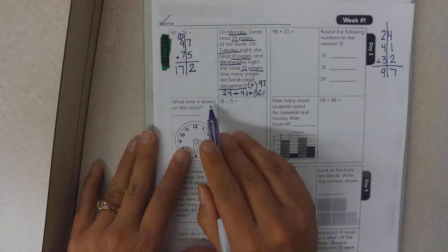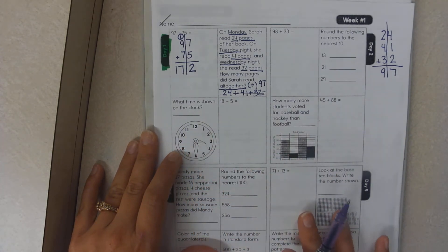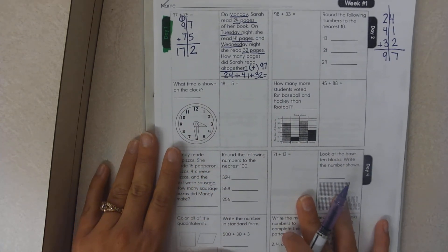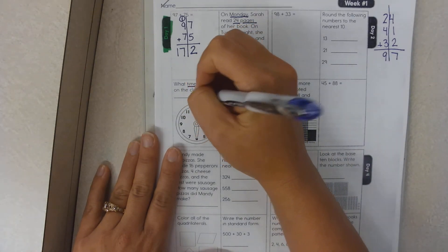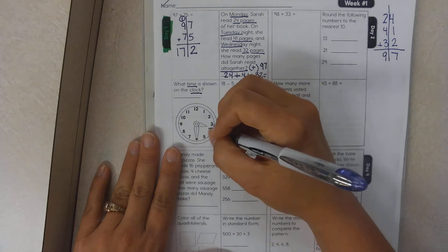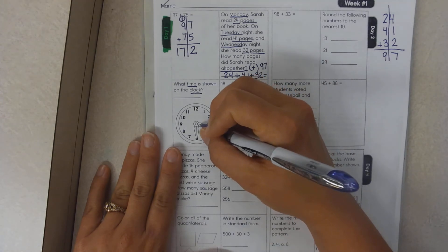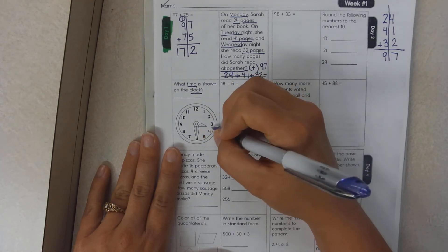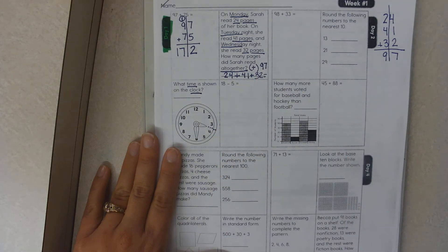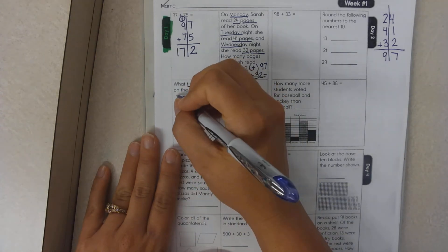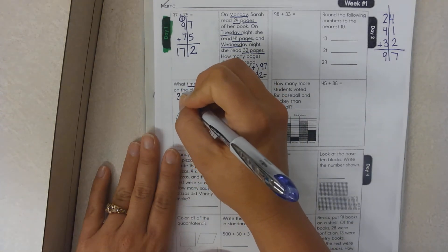What time is shown on the clock? I need to know the time on the clock. The hour hand is the small hand. So it is, if I point, it goes somewhere in between the 3 and the 4, which means it is 3 o'clock.